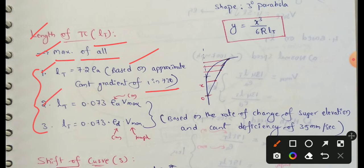Second: length of transition curve equal to 0.073 actual superelevation in centimeters into maximum speed.